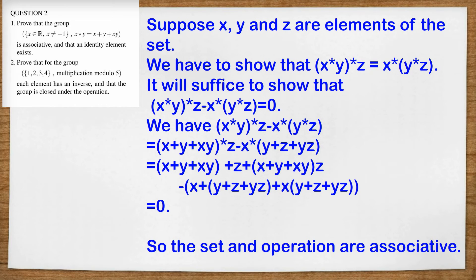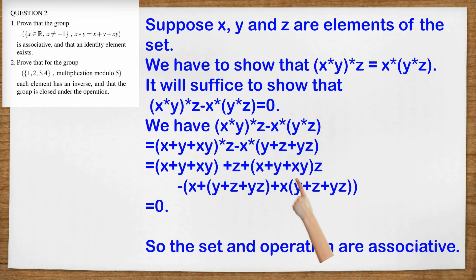Now for the second line, what do I need to do? Here you can see I've got two elements. The first is x plus y plus xy, and then the star and the z. So to expand that, I have the first element, x plus y plus xy, plus the second element z, plus the product of the two, which you can see here. Then I start subtracting this part here, and you can see the result there. And when you work all of that out, you get zero. So the set and the operation are associative.